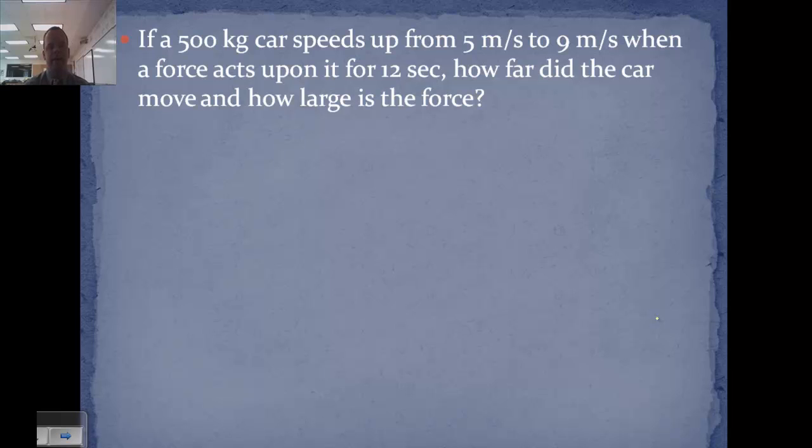A 500 kilogram car speeds up from 5 meters per second to 9 meters per second when a force acts on it for 12 seconds. How far did the car move and how large is the force? So we're looking for a number of different things here. We have the mass 500 kilograms, initial velocity of 5 meters per second, final velocity of 9 meters per second, time 12 seconds. And we want to know the displacement of the car and the force on the car.